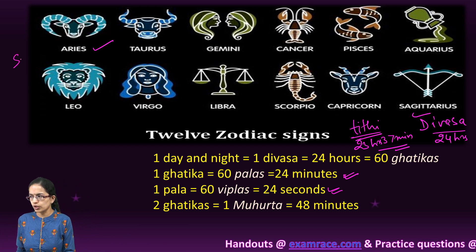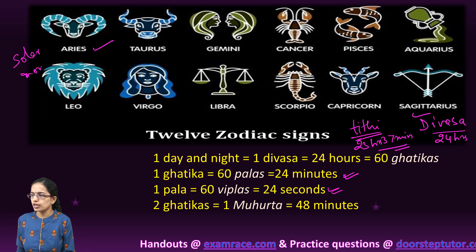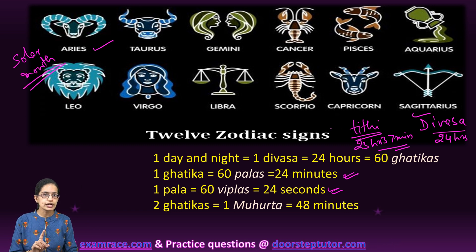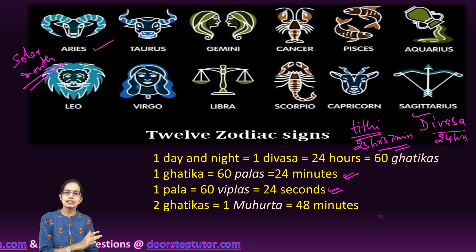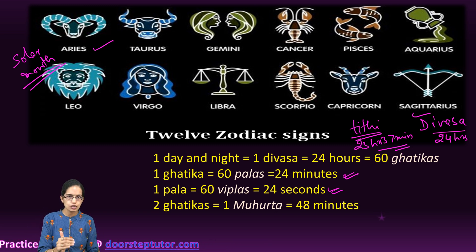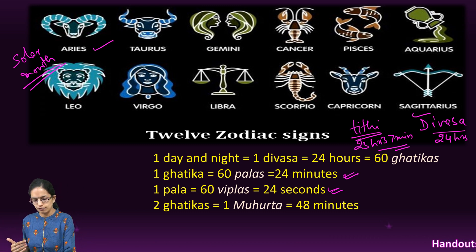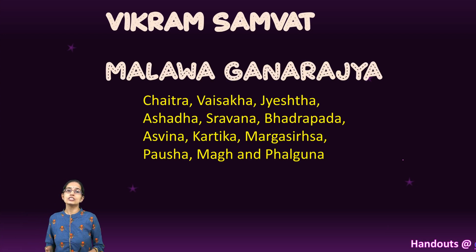To summarize so far: we covered the solar month and the lunar day versus the solar day — Tithi being the lunar day and Divas being the solar day — along with the further classification of Tithi into Ghatika, Pal, and Vipal. Now let's move on to the major calendars.